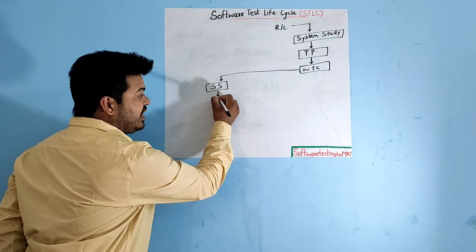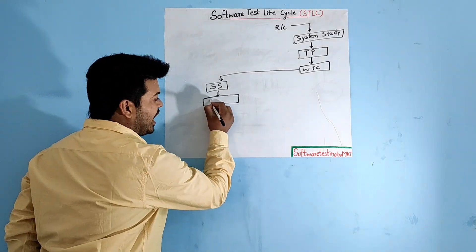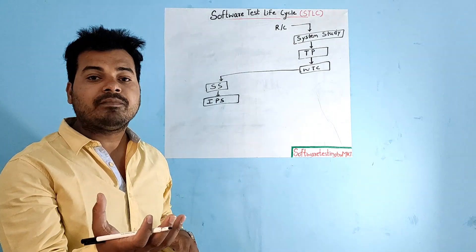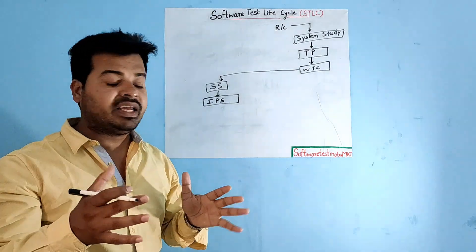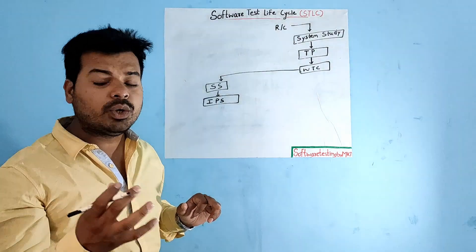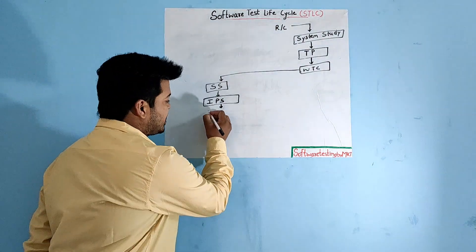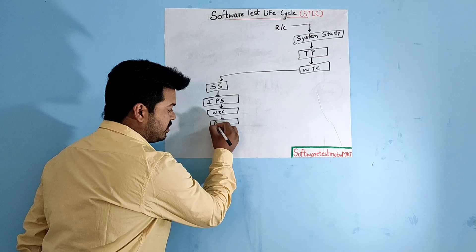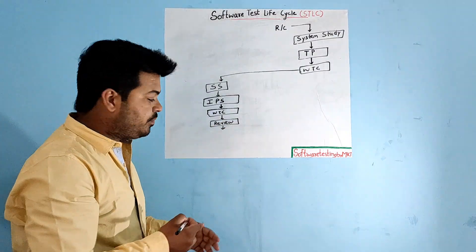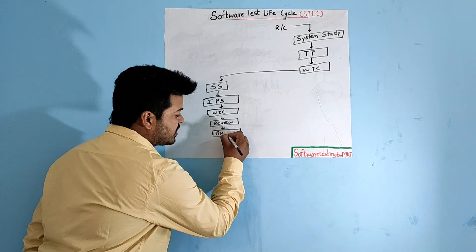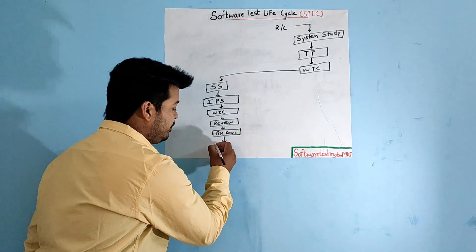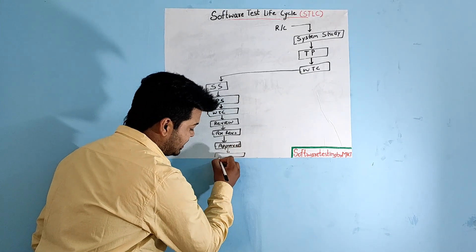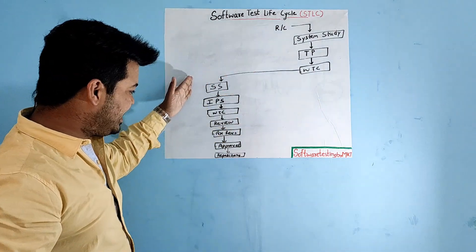After system study, test engineers identify all possible scenarios for testing their assigned module. Then they write all test cases. After writing test cases, they get them reviewed. Once review is done, they fix review comments. After fixing review comments, they get approval. Once approval is done, the test cases are stored in a test case repository tool. These are all the sub-stages under the write test cases stage.